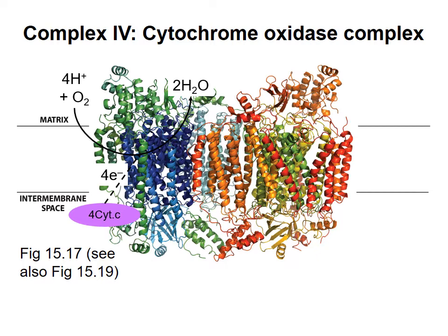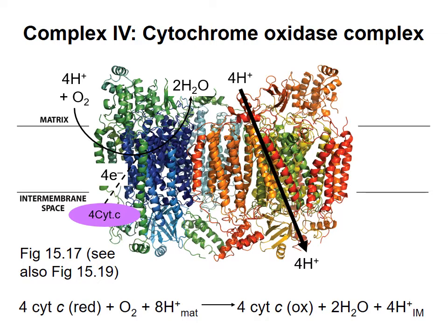Electrons from four cytochrome C proteins travel through these sites and are ultimately used to reduce oxygen to water. The four protons added to oxygen in this process come from the matrix. At the same time, the energy from electron transport is used to move four protons from the matrix to the intermembrane space. The net reaction for this complex is shown at the bottom of the screen.